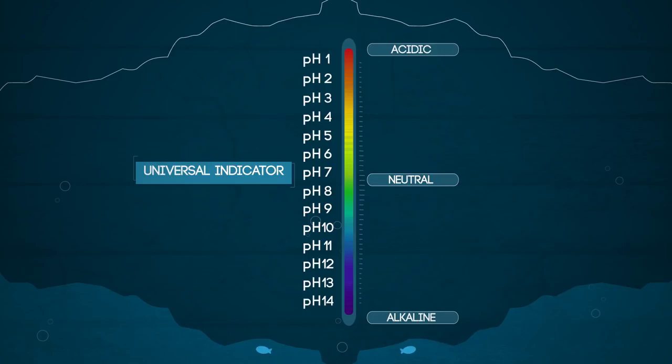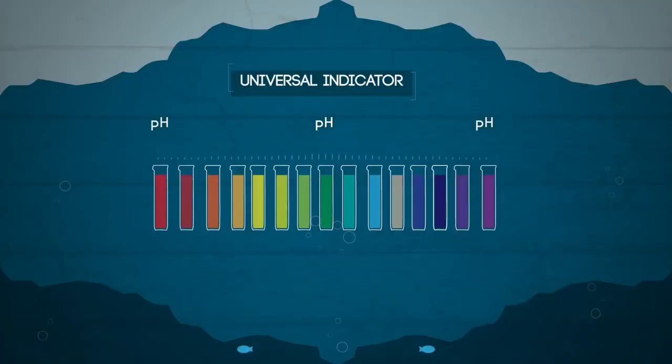Universal indicator is a mixture of different indicators, or dyes, which has many different color changes and so shows us the pH value of the solution. Again, it can be used as a liquid or a paper.